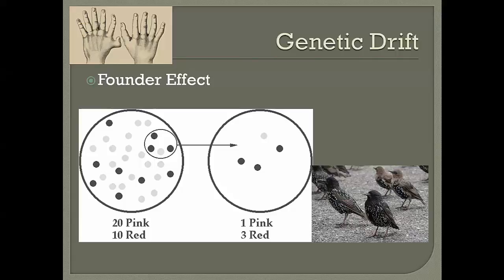Another founder effect example is starlings. Starlings are a bird from Great Britain, and in the 1800s some individuals released about 20 starlings in New York to have all the birds Shakespeare wrote about in America. Those starlings formed giant populations and are now a huge pest across the United States — all somewhat closely related to that original small released group.